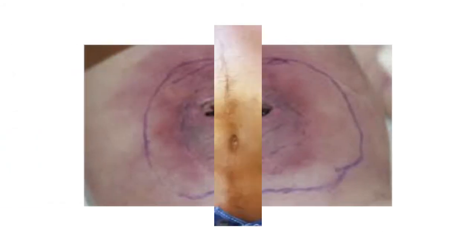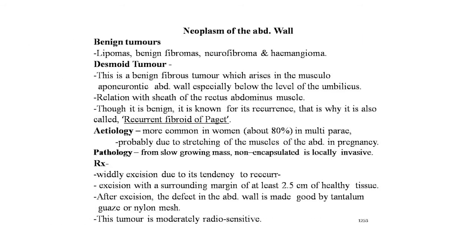Neoplasms of the abdominal wall — benign tumors may arise from any element of the abdominal wall. Lipomas are not uncommon and are treated by simple excision. Benign fibromas, neurofibromas, and hemangiomas may also be seen. The most important benign tumor is the desmoid tumor of the abdominal wall. This is a benign fibrous tumor arising in the musculo-aponeurotic abdominal wall, especially below the level of the umbilicus, often in relation to the rectus abdominis sheath. Though benign, it is known for its recurrence.